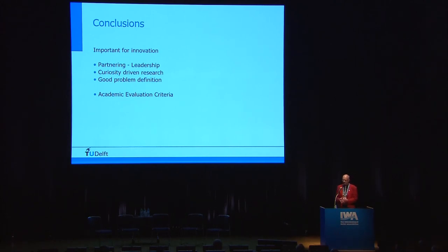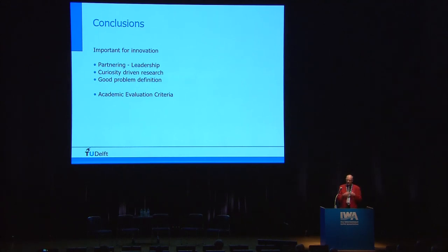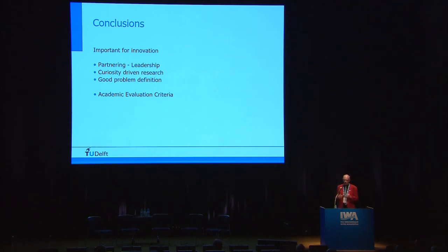In conclusion, important for innovation is partnering and having the right leadership — not designated leadership, but natural leadership. Curiosity-driven research is needed to get really breakthrough innovations, and very good definition of where the problem is in your invention, solving that problem rather than just trying to show it's a very good invention. And finally, what's needed is better academic evaluation criteria for your impact on society. Thank you.